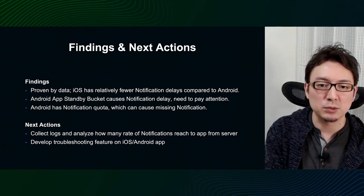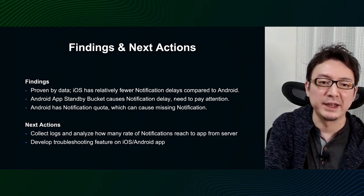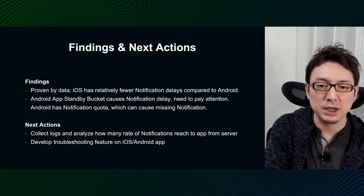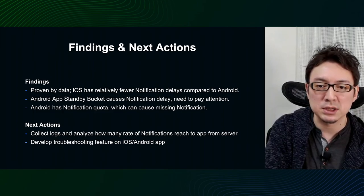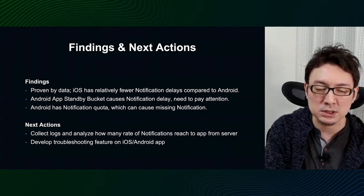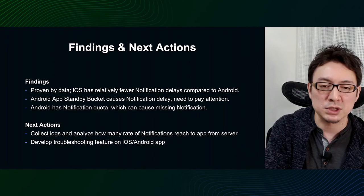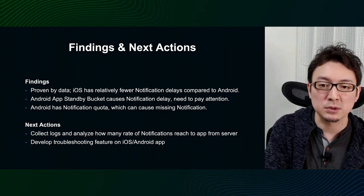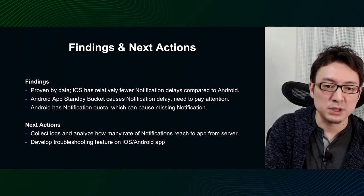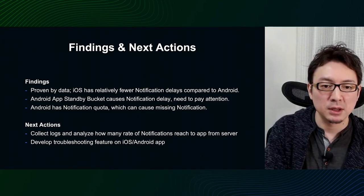Let me summarize. As for what we have noticed: first, we were able to confirm from the data that iOS seems to have fewer problems with notification latency than Android. Android App Standby Bucket could be the cause of delay — since this is a specification, it is necessary to minimize unnecessary FCM API calls on the server side, or set only really necessary notifications to high priority and lower the priority for less urgent ones. When analyzing data, it is necessary to obtain the status of the bucket at the time of log collection and look at the data while taking the bucket into account. There is also a limit to the number of notifications that can be displayed for Android. If necessary, you have to handle this for many-notification cases such as chat. However, since the upper limit changes depending on the Android OS version and there is no definitive specification in the documentation, implementation should be done carefully.